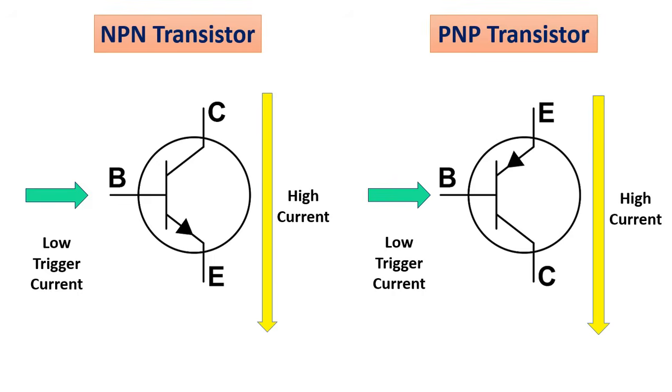PNP transistors allow electricity to pass from the emitter pin to the collector pin. They are represented in a schematic with a line for a base, a diagonal line connecting to the base, and a diagonal arrow pointing towards the base.